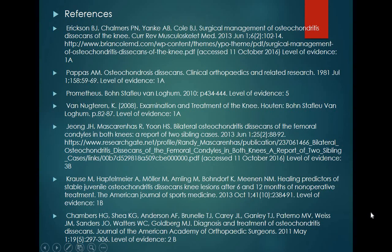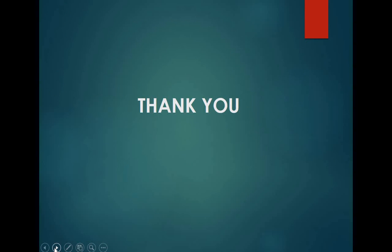To summarize, osteochondritis dissecans is a condition affecting the articular cartilage due to loss of blood flow or avascularity, leading to osteonecrosis where a fragment breaks off and presents as loose bodies in the joint, causing various clinical problems. We have covered the surgical procedures and pathology. These are the references you can go through. Thank you for viewing this video — I hope it helps you understand this condition better, and please feel free to discuss any doubts.